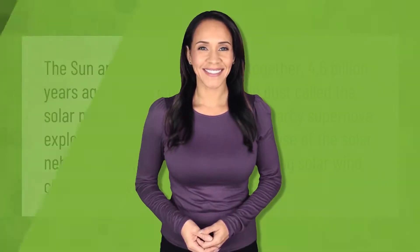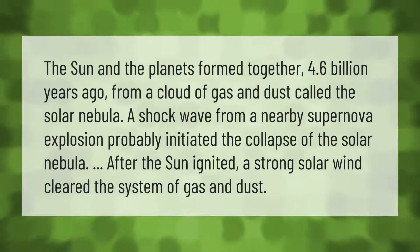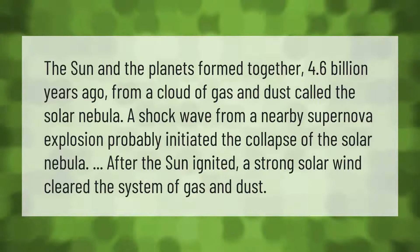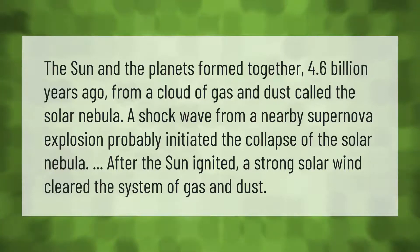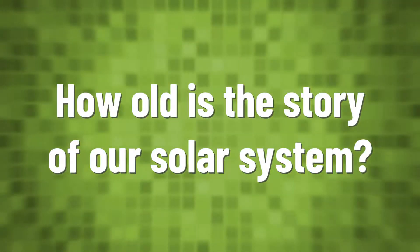The sun and the planets formed together 4.6 billion years ago from a cloud of gas and dust called the solar nebula. A shock wave from a nearby supernova explosion probably initiated the collapse of the solar nebula. After the sun ignited, a strong solar wind cleared the system of gas and dust.